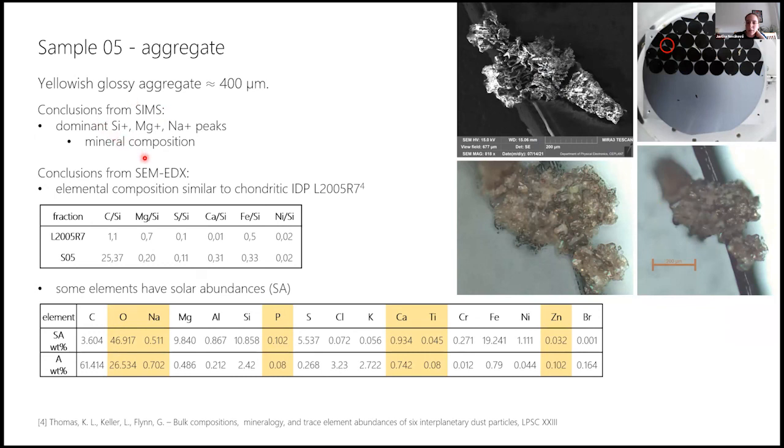And the last particle was an aggregate of smaller components which were of mineral composition. And in this case the analysis was not very straightforward. We saw some similarities in composition with an interplanetary dust particle published by Thomas, Keller, and Flynn. And some elements were in the solar abundances, but overall we were not quite sure. But we can conclude, not so decisively as with the first two ones, that it could be a micrometeorite.